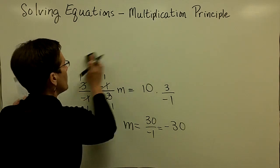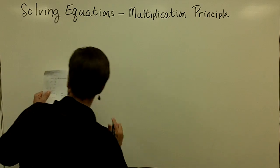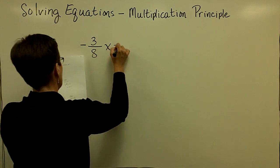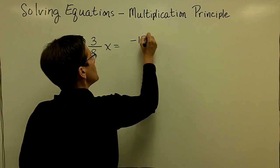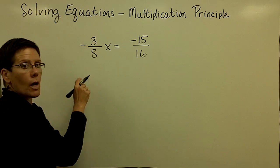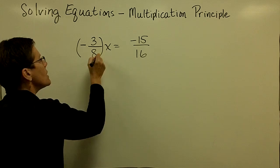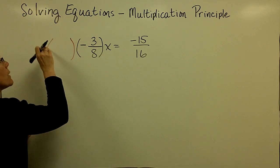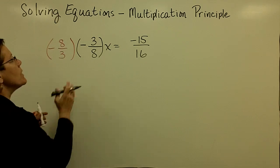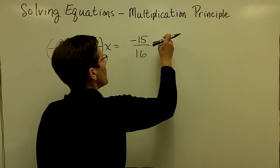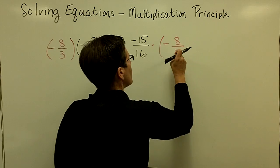Let's take a negative 3 eighths x equals a negative 15 over 16. I'm going to grab my red pen. The reciprocal of a negative 3 eighths is a negative 8 thirds. I'm going to do this in red so you can see this a little bit more clearly. So I'm going to multiply by a negative 8 thirds since that is the reciprocal of a negative 3 eighths. So over here, I'm going to multiply by a negative 8 thirds.